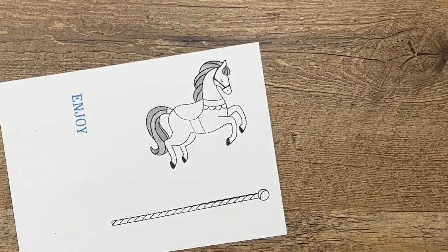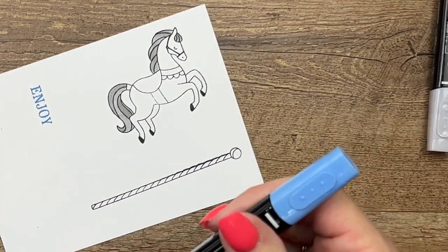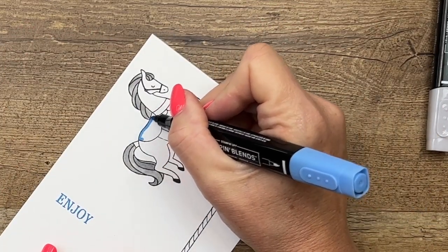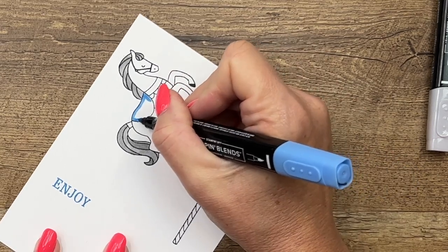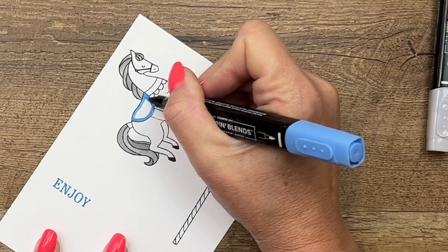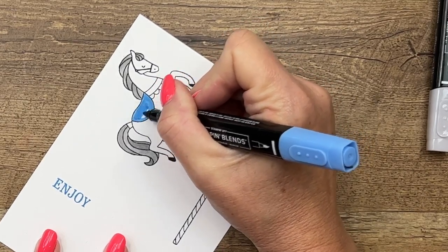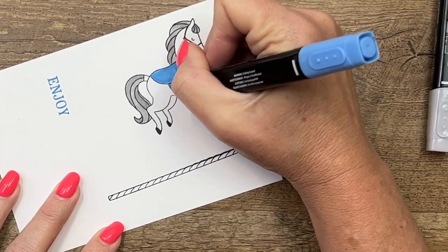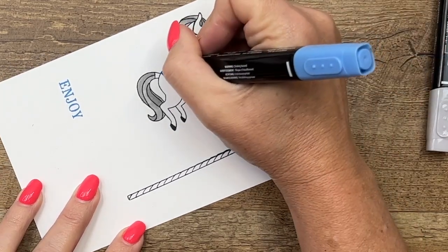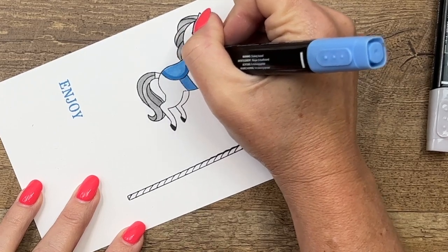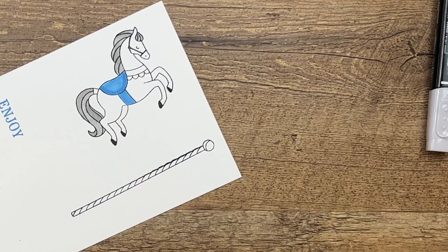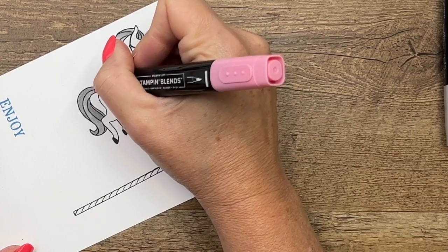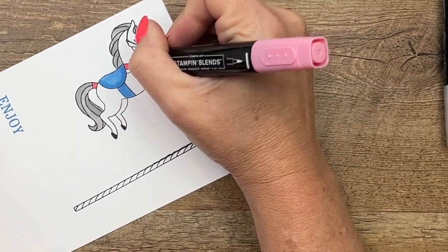Alright, now we're going to use Azure Afternoon to color in the saddle. This is one of our new core colors. It's a really good turquoise-y blue. Well no, that's probably not a good description. It's, well I don't know, it's a beautiful blue like what you would see on the Greek islands. That's a good way to describe it. It's not green, it's very blue. So not turquoise-y. In my mind I always think it's turquoise-y, but it's not. Alright, now let's take Flirty Flamingo and color in the rest, this little decoration right here.